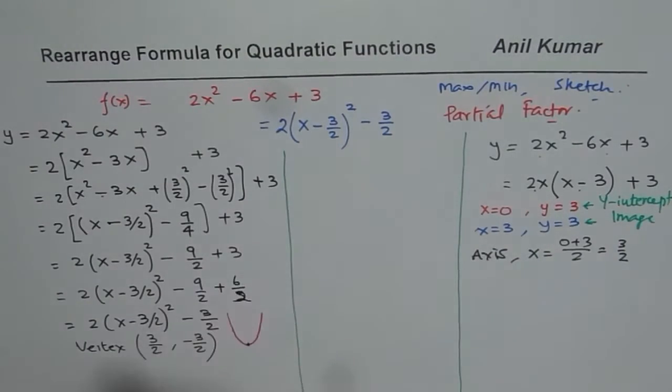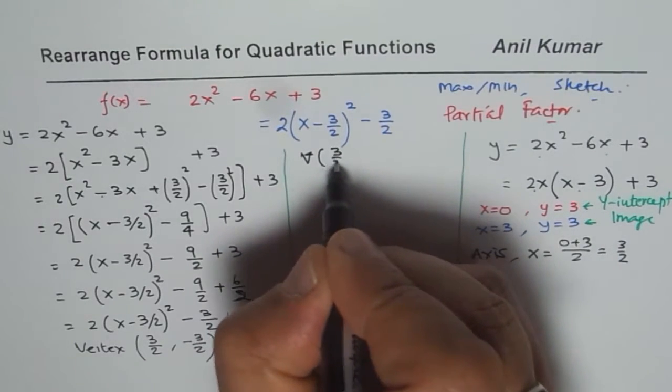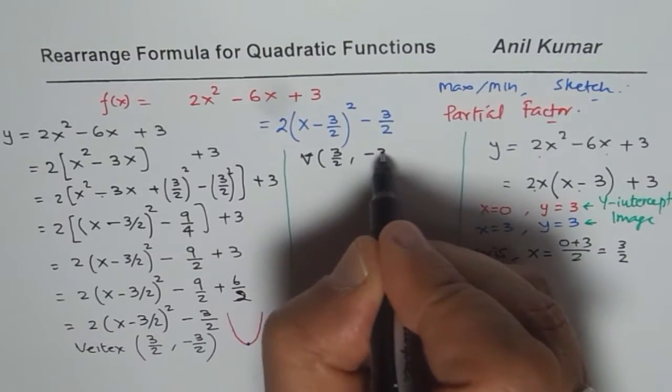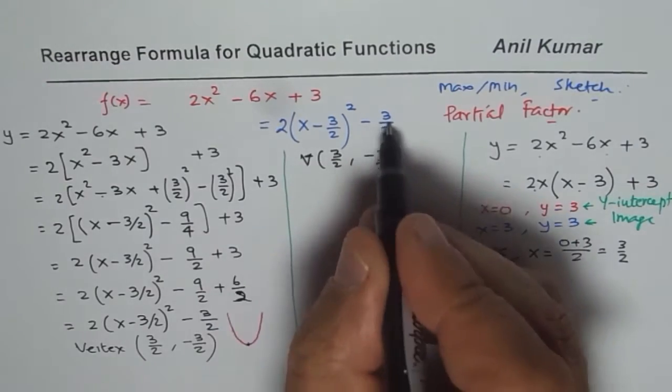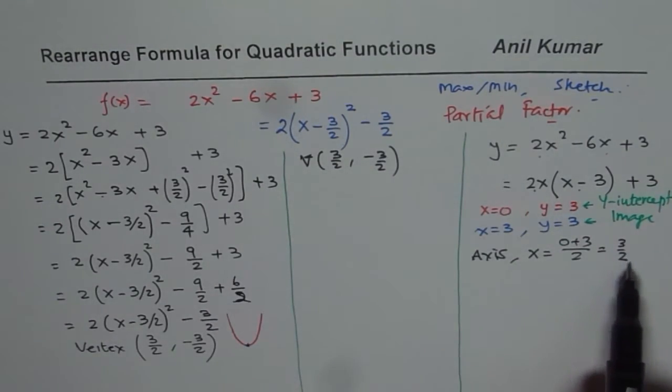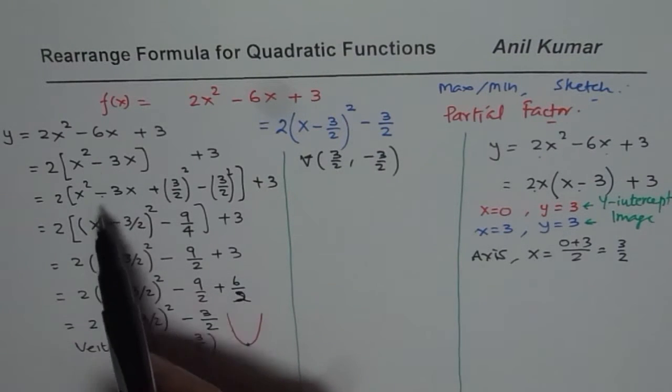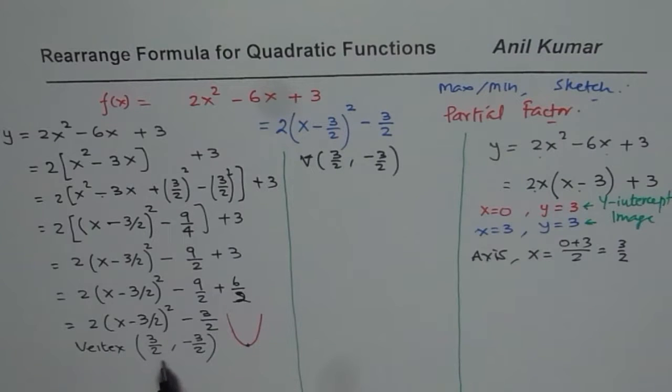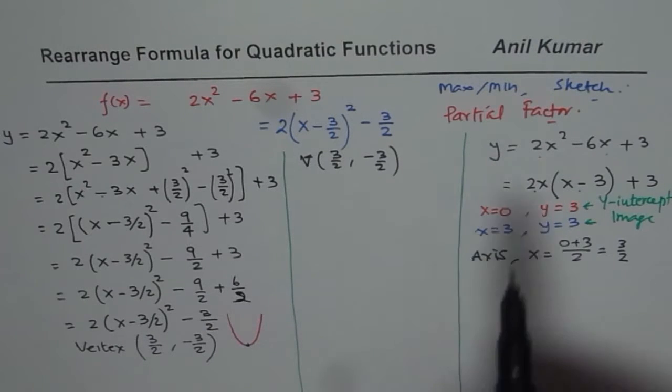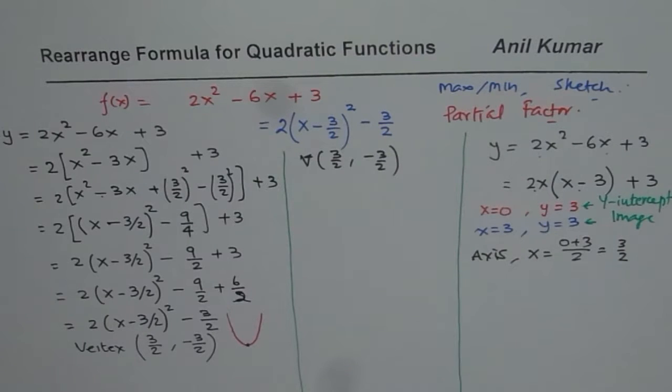So as you can see here, the vertex is 3 over 2, and the minimum value is minus 3 over 2. At 3 over 2, the minimum value is minus 3 over 2. So we get the same axis value, x equals to 3 over 2, using this formula in two steps, rather than so many. That's a huge advantage. And therefore, I prefer to use partial factoring for most of my questions. And I'll recommend you to use the same formula.